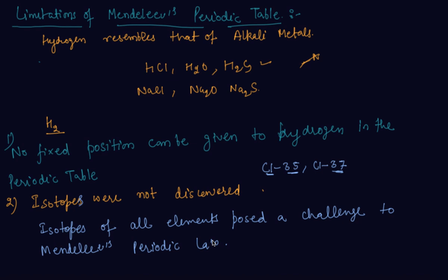So students, till now we have discussed about the achievements and limitations of Mendeleev's periodic table. If you have any doubt or question based on this, please do comment in the comments section — I will be happy to help. Stay tuned for the next lecture on the modern periodic table. Thank you students, happy learning. Bye.